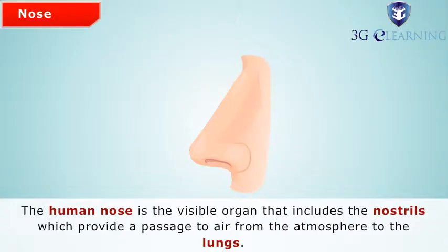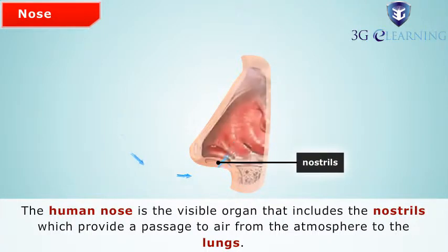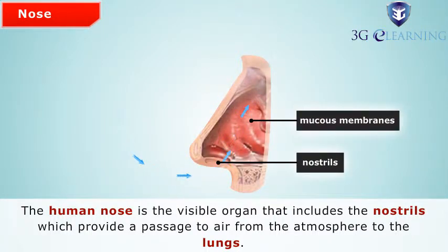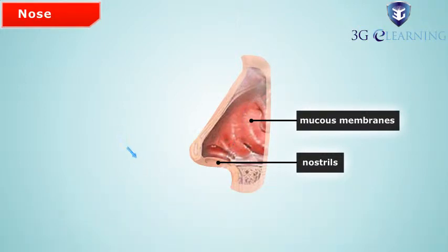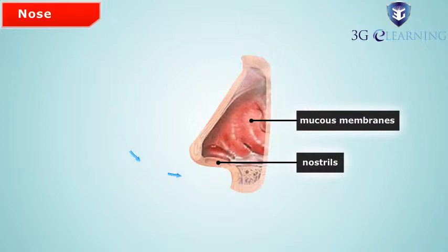Nose. The human nose is the visible organ that includes the nostrils, which provides a passage to air from the atmosphere to the lungs. It has fine hair to clean air while it is traveling inside, and several mucous membranes to moisten the air before it enters the lungs.